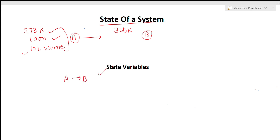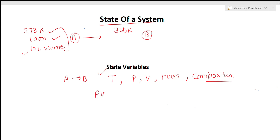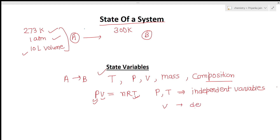The properties that change with changing the state of the system are called state variables. These properties are temperature, pressure, volume, mass, and composition — all are state variables. It is not necessary to specify all state variables, as some are interdependent. For example, in the equation pV = nRT, if we know pressure P and temperature T, we can calculate V. So P and T are independent variables and V is the dependent variable.